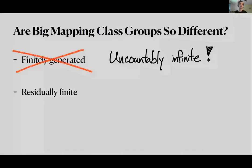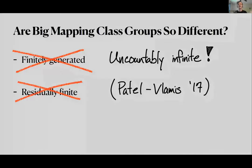Mapping class groups are also classically residually finite. But in 2017, Patel and Vlamis showed that no big mapping class groups can be residually finite. The key reason is that there's actually a braid group on infinite strands sitting as a subgroup of big mapping class groups, and those aren't residually finite.